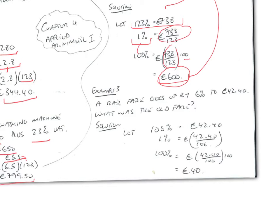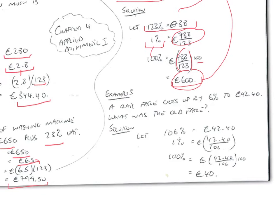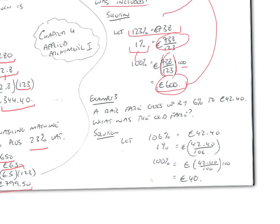A rail fare goes up by 6% to 42 euros 40. What was the old fare? Solution. Let this new fare, which is equal to 100% of the old fare plus 6%. So, let the new fare equal 106%, the old fare plus the 6% rise. If that's the case, divide that by 106, we get 1%, and divide the other side by 106, we get that 1% must be equal to 4240 divided by 106.